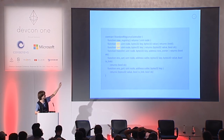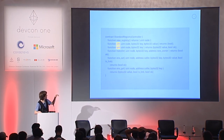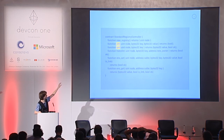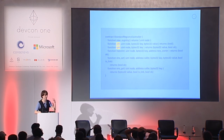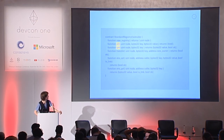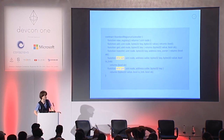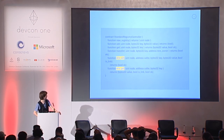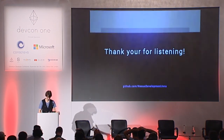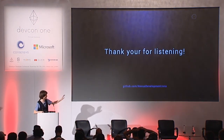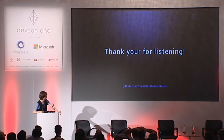This is a standard registry controller — it's simply a first come, first serve, zero fee controller. The new registry function is what you'll use to request nodes from the ENS app and get back an ID that you can then set using the set path method we talked about earlier. Set and get, of course, set and get values. The transfer function allows people to transfer ownership of nodes between each other. ENS set and ENS get we talked about earlier.